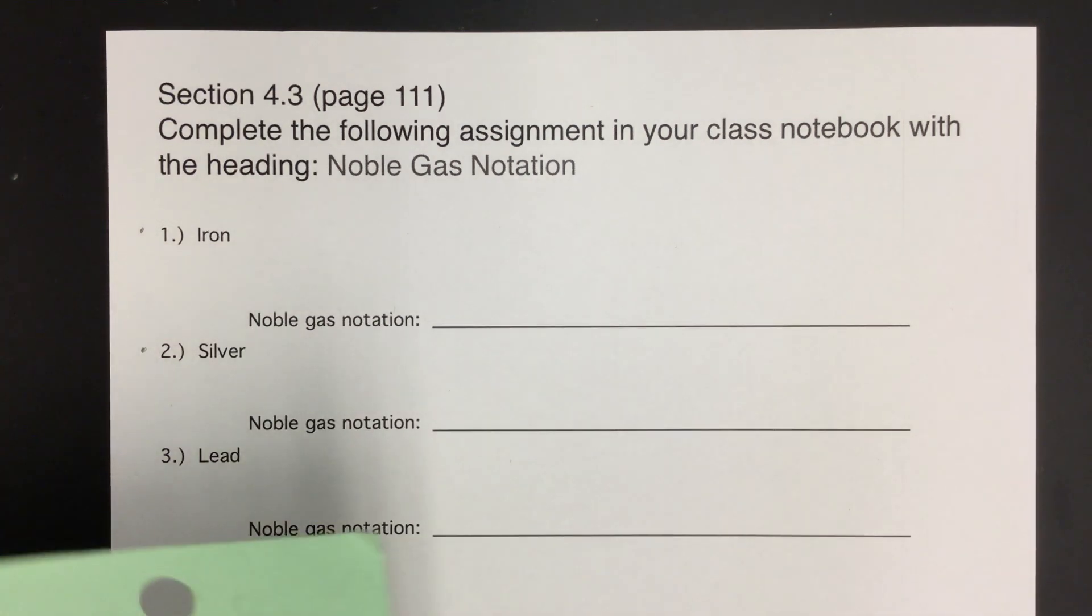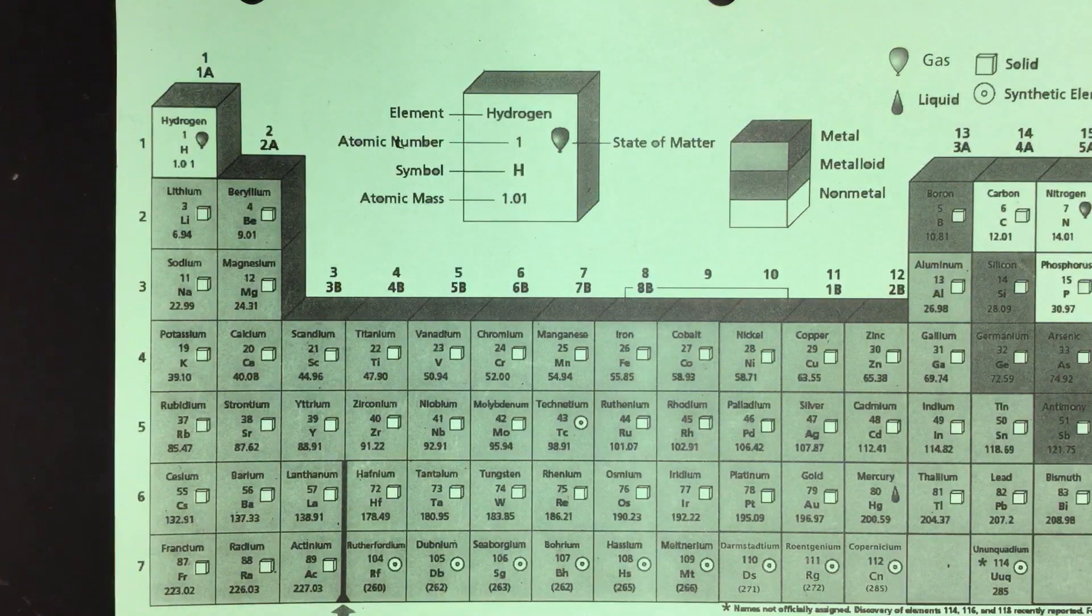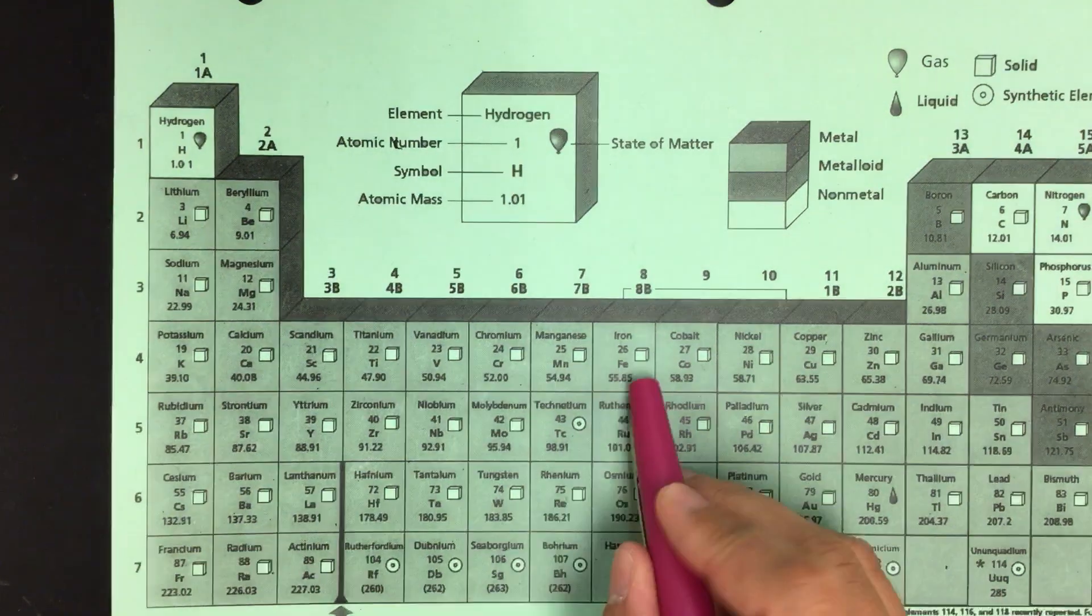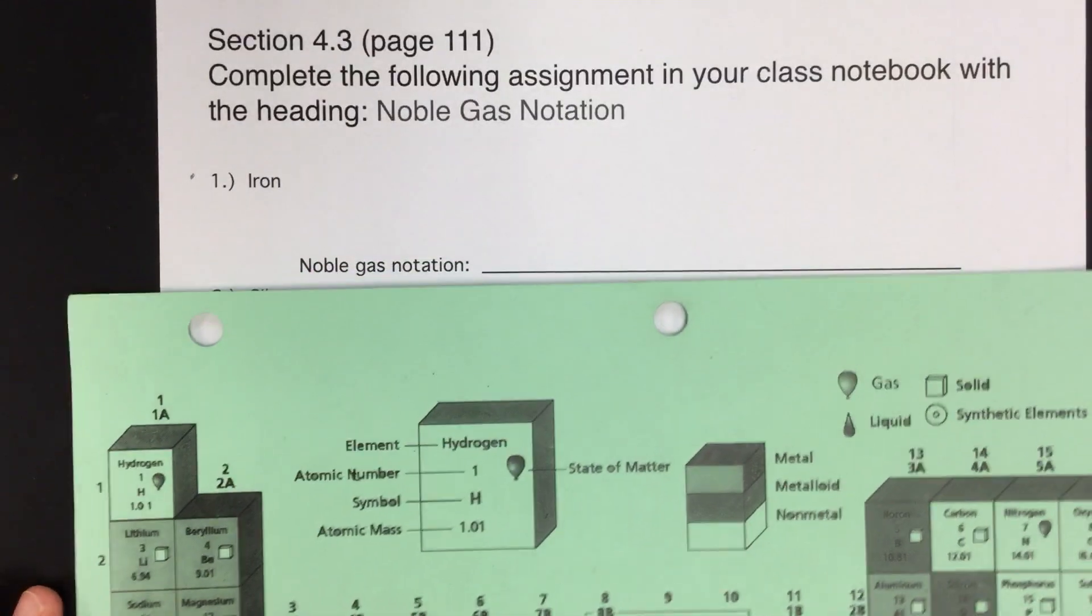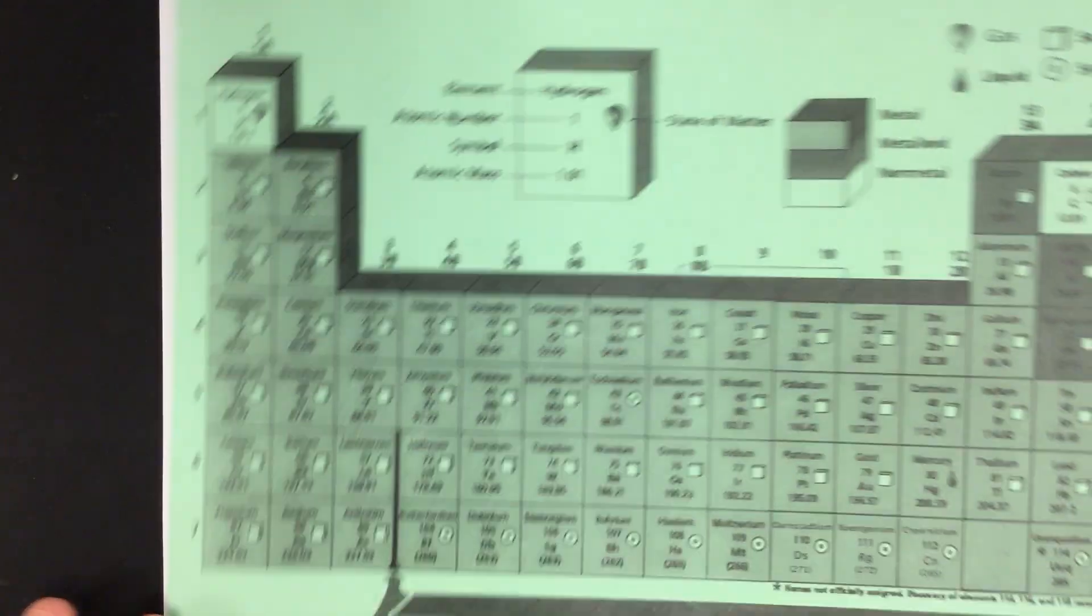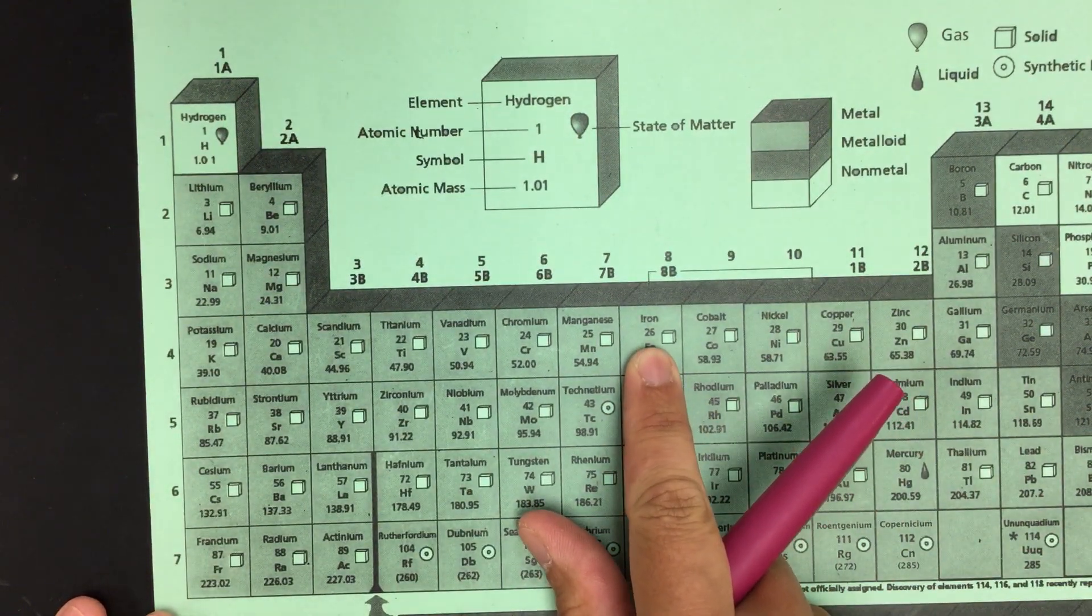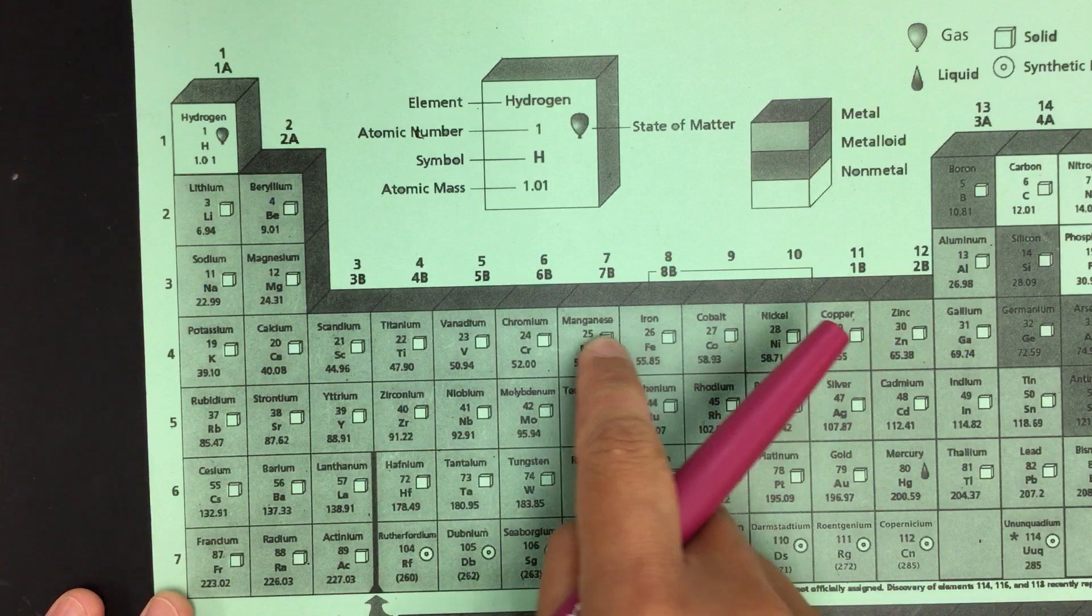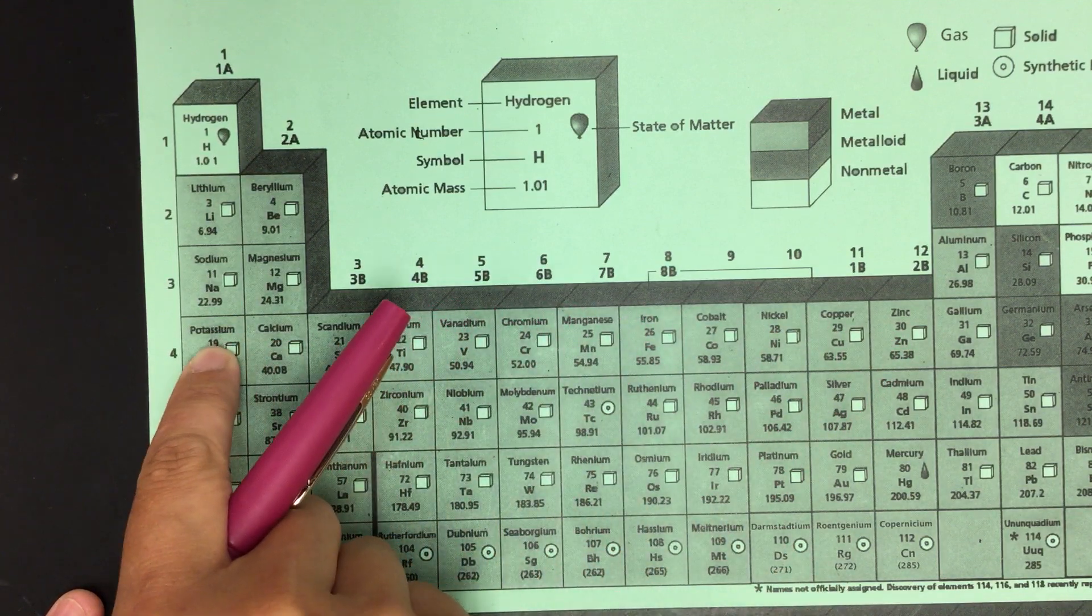So the way that you can do this very easily, using noble gas notation, is when you look at your periodic table and you find iron, which is the first one that we're trying to do, we find iron. And the way you can use noble gas notation very easily is to go backwards on your periodic table until you hit a noble gas.